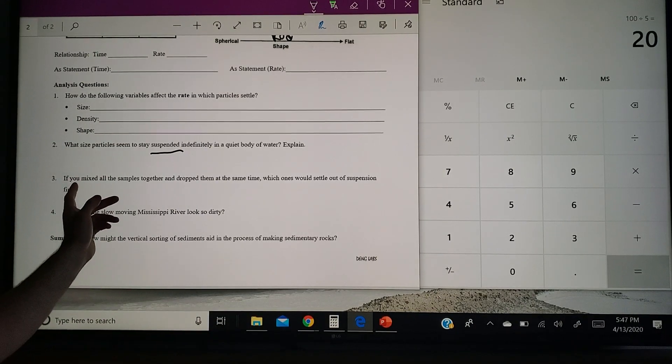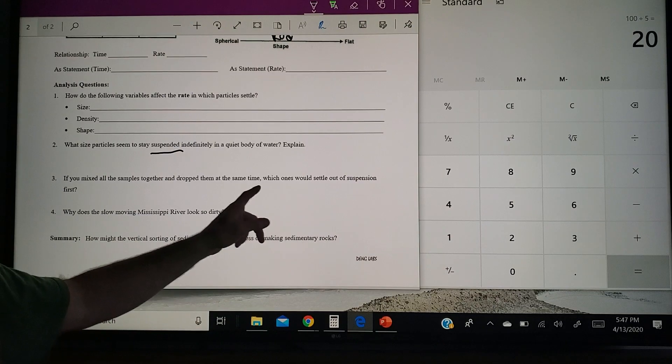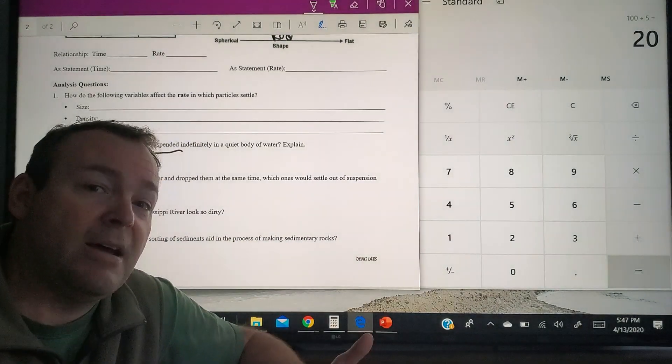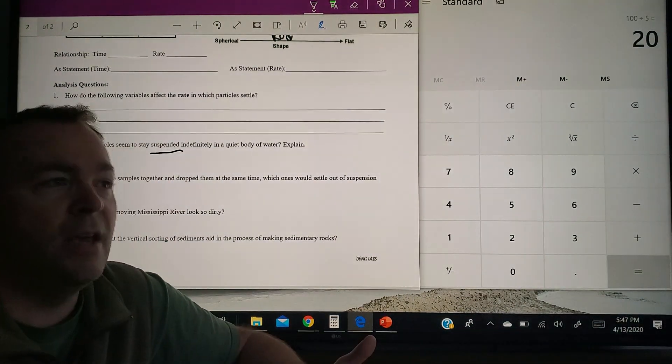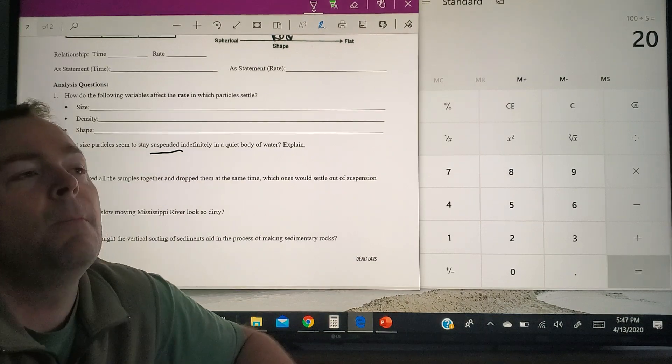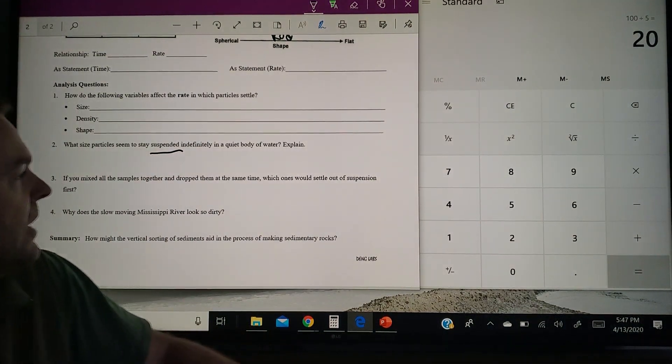The third one, if you mixed all the samples together, dropped them at the same time, who's going to get out of suspension the first? In other words, who's going to get to the bottom the fastest? And who's getting down the fastest? Your roundest, heaviest, densest, biggest.